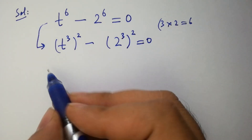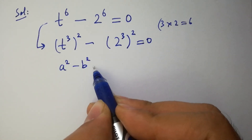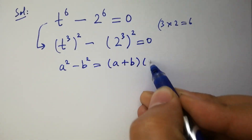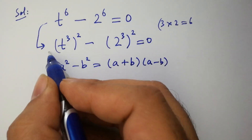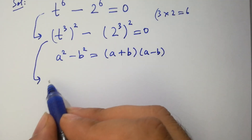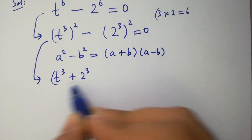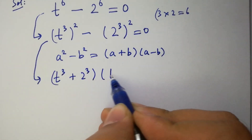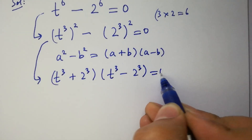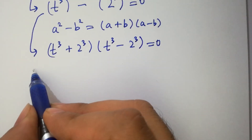As we know, a squared minus b squared equals (a + b)(a − b). Then we have (t³ + 2³)(t³ − 2³) equal to 0. We have two cases here. Case 1: